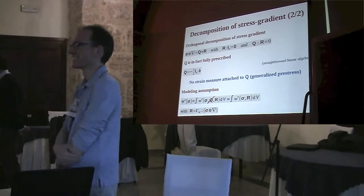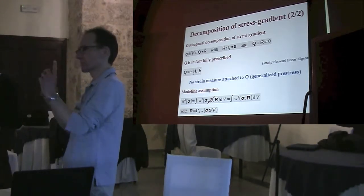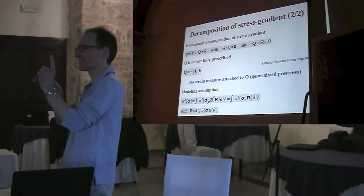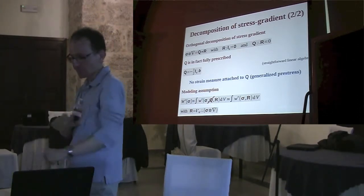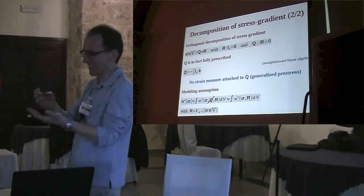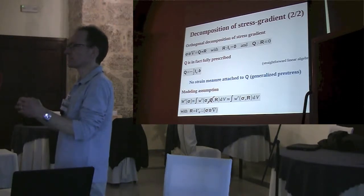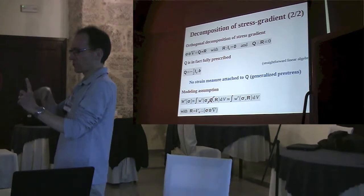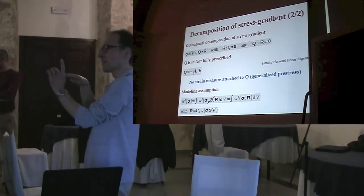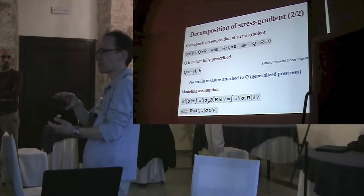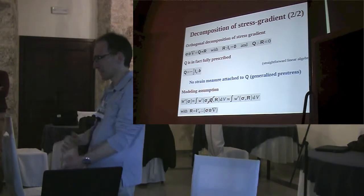Question: Is it possible for a material to exhibit both strain gradient and stress gradient effects? Answer: Yes, it might be possible — for instance, a material that is more stress-gradient in one direction and strain-gradient in another. The challenge would be formulating this, since you cannot define a pure complementary stress energy or a pure strain energy in that case. One could assume a mixed energy combining contributions of the stress gradient and the strain gradient, but this raises open questions.